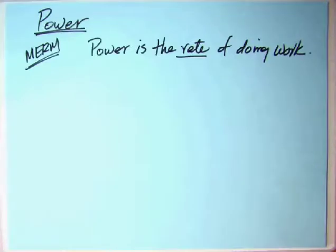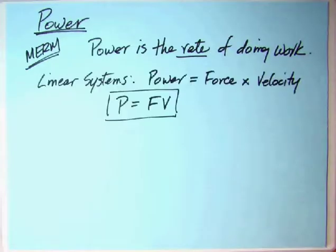In the MERM, power is defined as the rate of doing work. Picking a box up off the floor and raising it to a table is work. The rate at which you do that is the power. For linear systems, power is force times velocity, or P equals FV, where the force would be in pounds or newtons, and the velocity in either feet per second or meters per second.